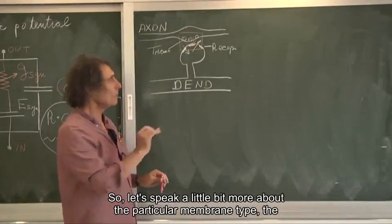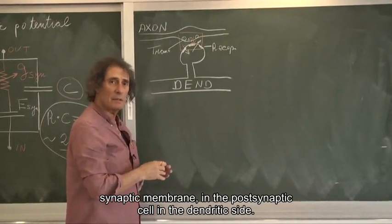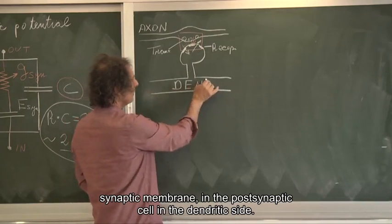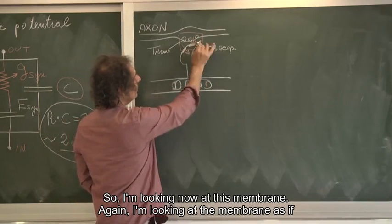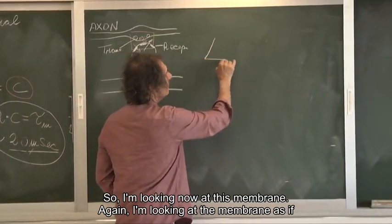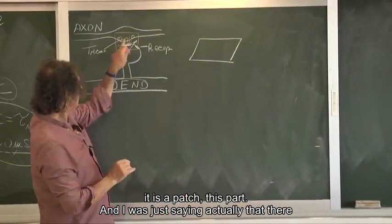So let's speak a little bit more about the particular membrane type, the synaptic membrane, in the postsynaptic cell, in the dendritic side. So I'm looking now at this membrane. Again I'm looking at the membrane as if it is a patch, this part.